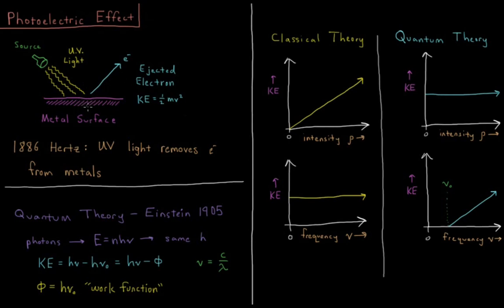The metal has its metal nuclei and electrons, and sometimes you'll kick one out with this UV light. The ejected electron has some kinetic energy: KE equals one half of mass times velocity squared. Velocity is how fast it's moving per unit time, and mass is how much it weighs. In 1886, this was discovered by the physicist Hertz.